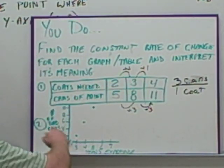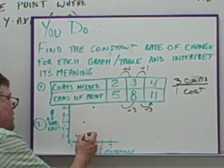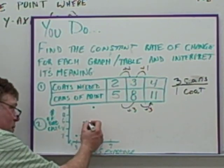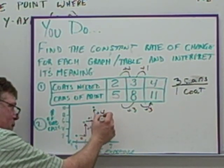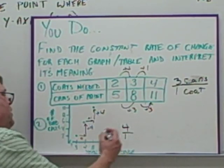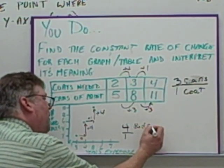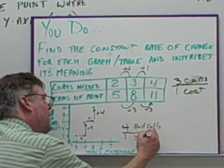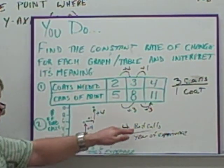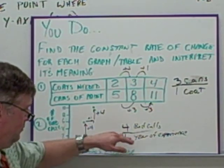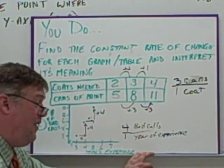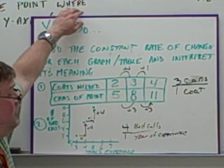Over here, number of bad calls. Going from here to here, we went plus 1. Going up, we went from 2 to 6, which is a change of 4. And this is going to be the same change, plus 1, plus 4. So the rate of change, the y over the x, is going to be 4 over 1, which is number of bad calls, 4 bad calls per year of experience. Here we can add a little bit more to the interpretation. Instead of just saying 4 bad calls per year of experience, we can make a note that the longer they've been working as a ref, the worse they are at it because they keep making more bad calls. Interpret can include something like that as well.